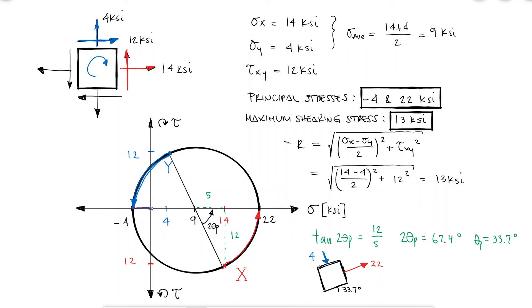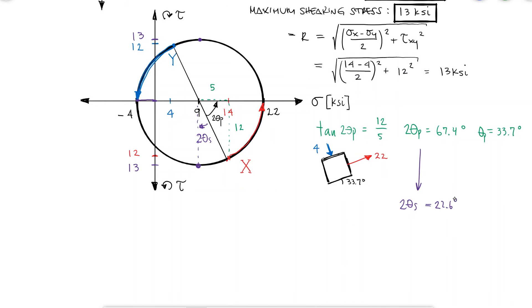The angle of rotation so that x becomes the maximum shearing stress would be the complementary angle to 67.4 and in the clockwise orientation. The new values for sigma x and sigma y would both be positive 9.